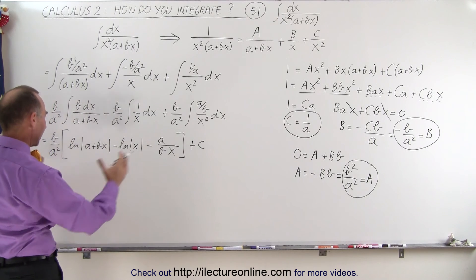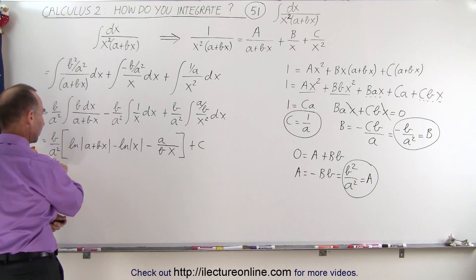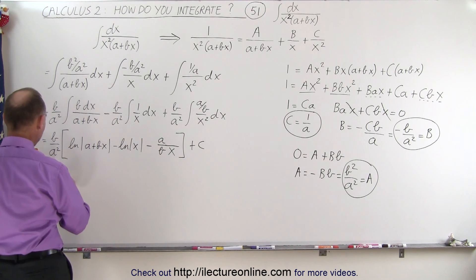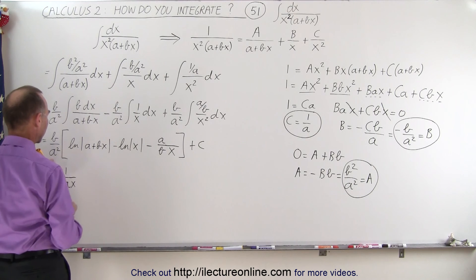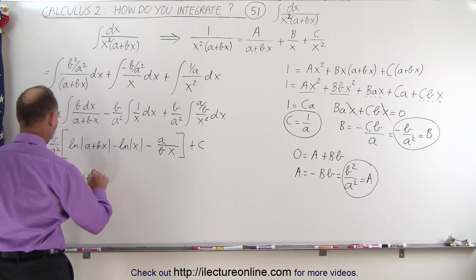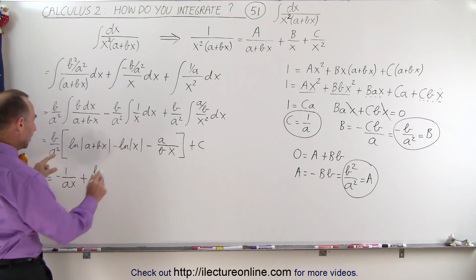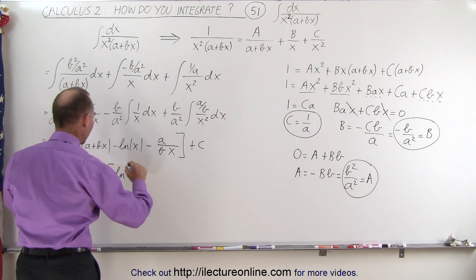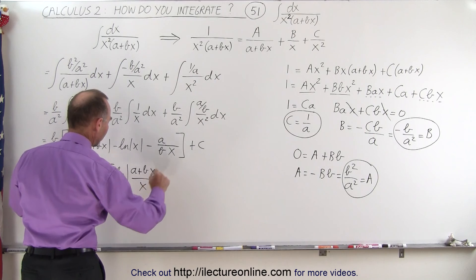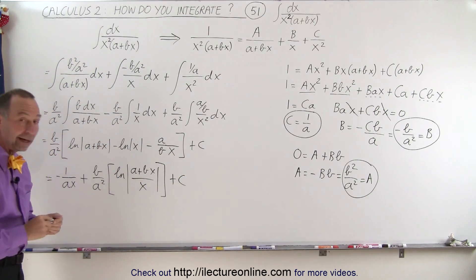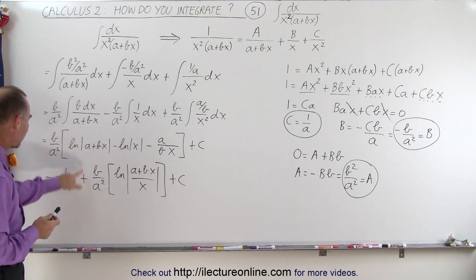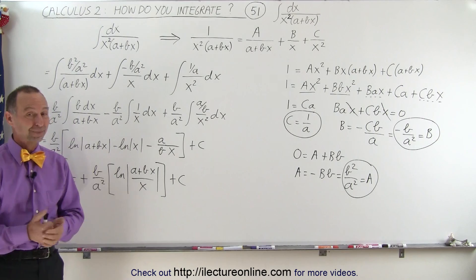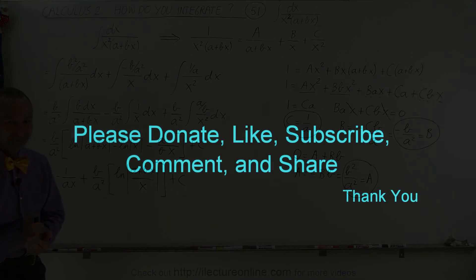Now we can combine things. Multiplying b over a squared by a over b, the b's cancel, giving minus 1 over ax. For the logarithmic terms, we still have b over a squared as the coefficient, and natural log of (a plus bx) minus natural log of x can be written as the natural log of (a plus bx) over x. So the final answer is minus 1 over ax, plus b over a squared times the natural log of (a plus bx) over x, plus a constant of integration.